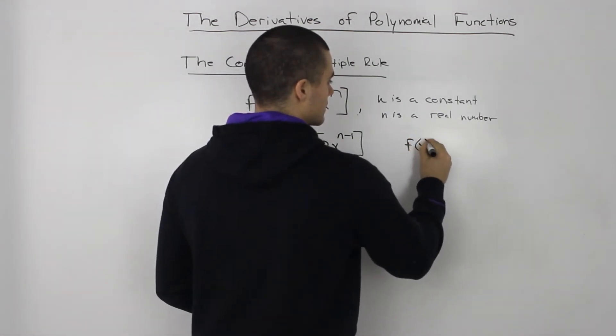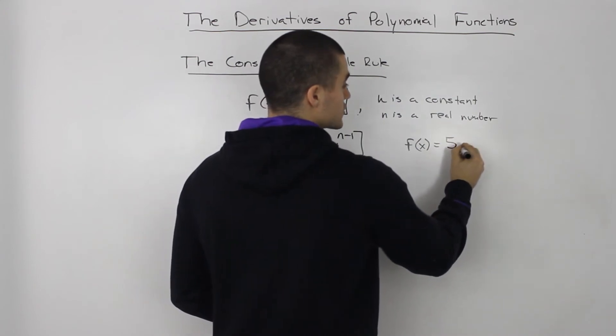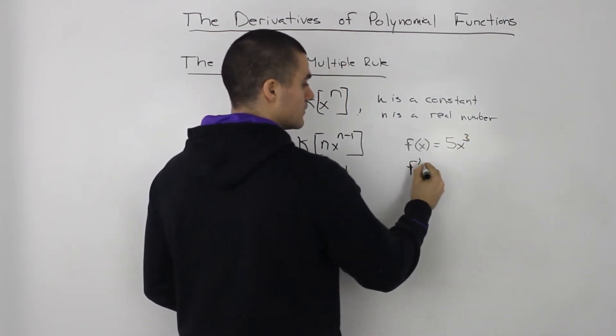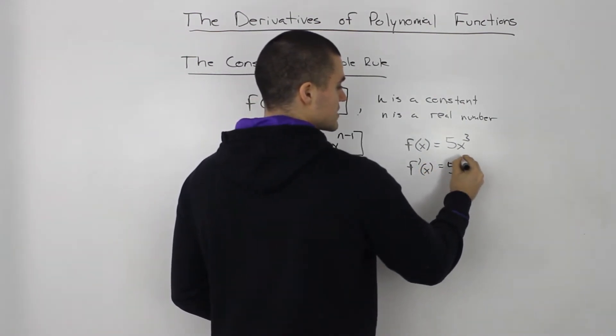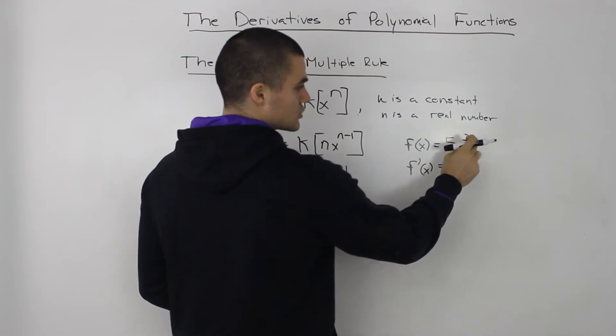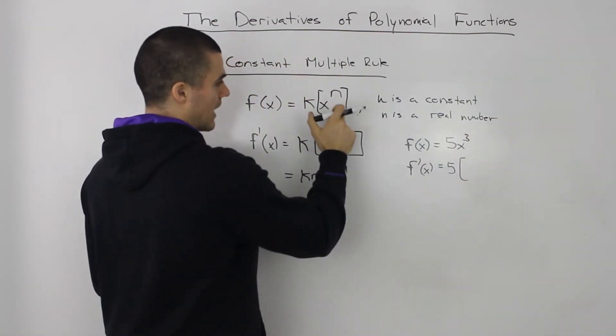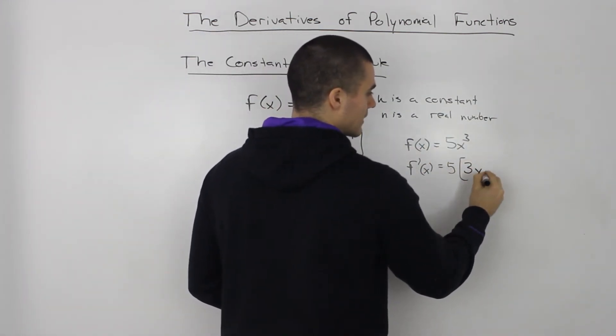if I'm given something like, let's say, 5x³, all right, and I have to take the derivative of it, well, I would just separate the constant 5 and then I would take the derivative of just the x³ part using the power rule. So what happens? We bring the n down, so the 3 we bring down, x